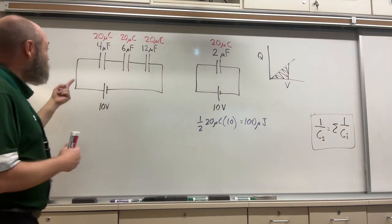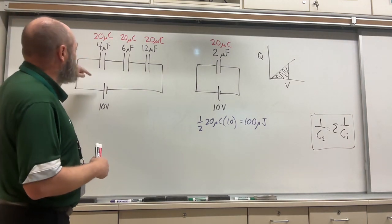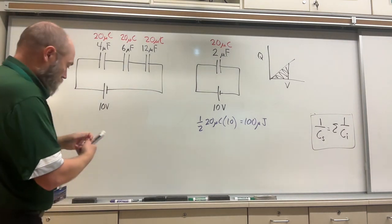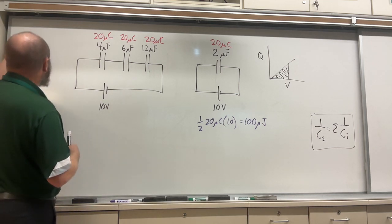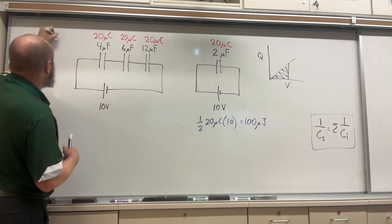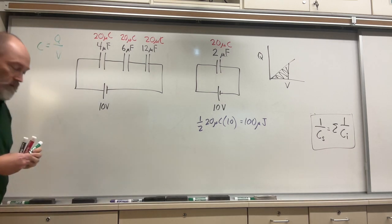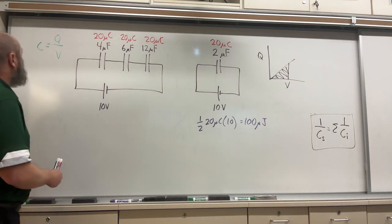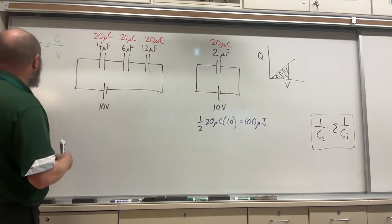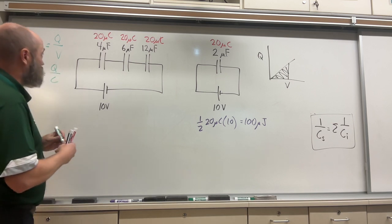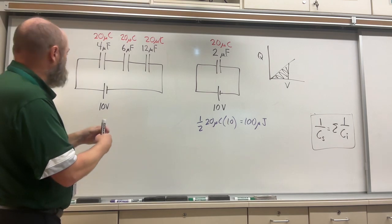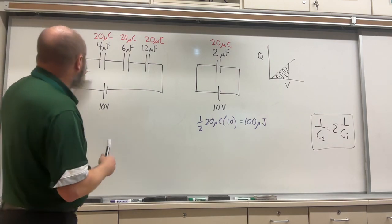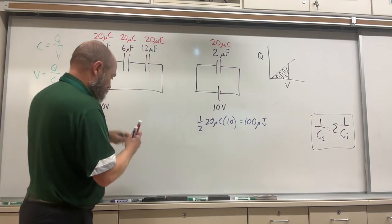And then if you take a look, well, then I can solve for the voltage. Because again, if you think about your equation, where your equation is C equals Q over V. That means that voltage equals Q over C. So if I take 20 divided by this, you are going to get 5 volts.